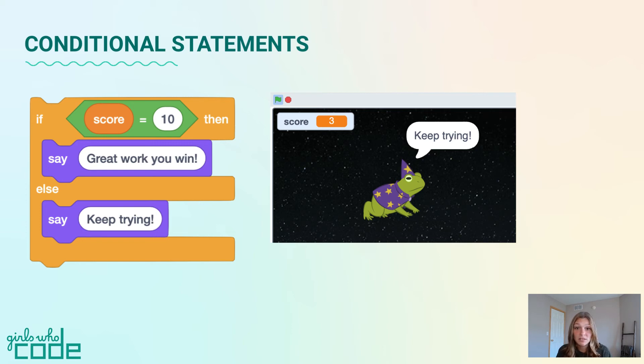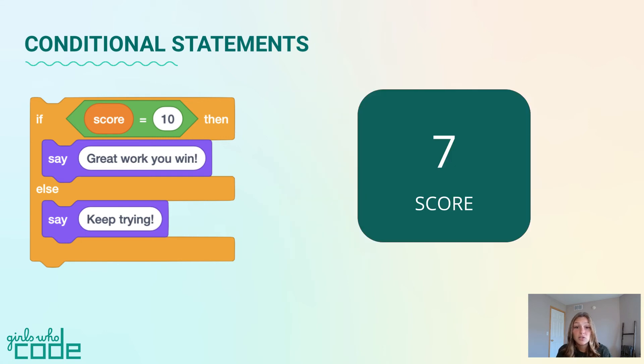Programmers use conditionals to make decisions in their programs. They allow you to control how the code is executed. Using this same if-then-else conditional statement, if the score in our game was equal to 7, what would the program perform?